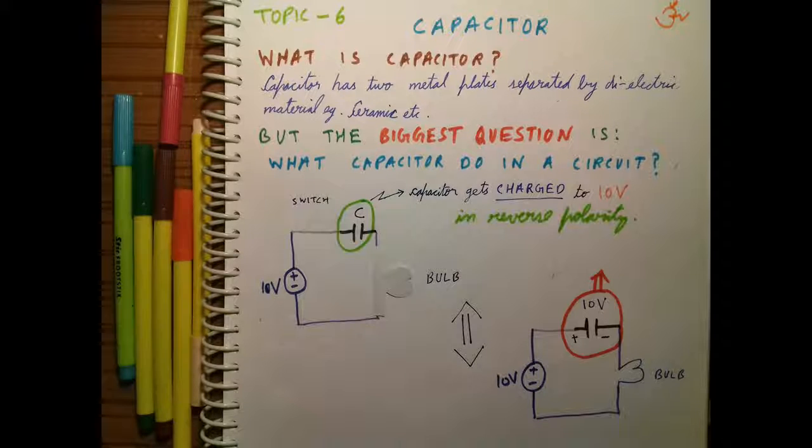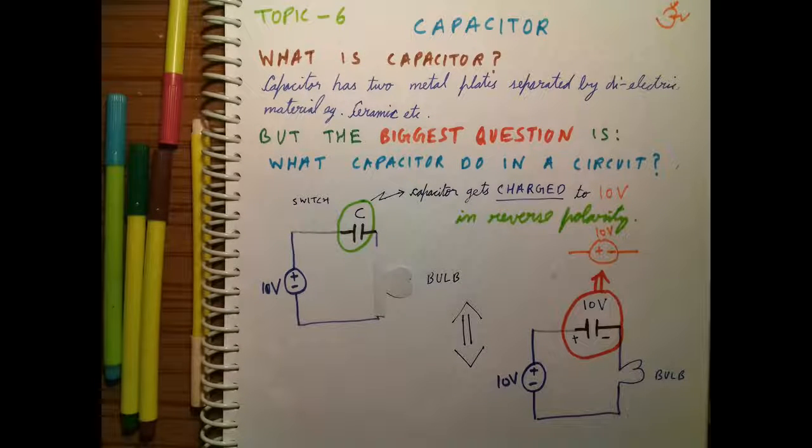In the circuit, there are two sources: one is the actual DC source of 10 volts, and another is the charged capacitor which is charged in reverse polarity. So these two sources cancel each other. That's why no current flows in this circuit. That's why the bulb does not glow.